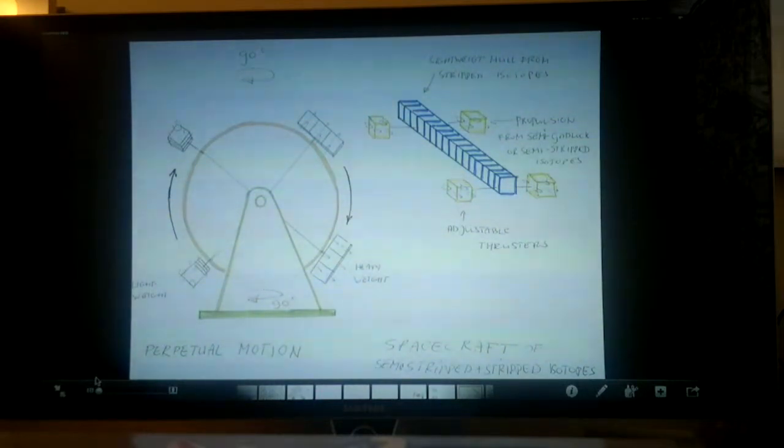By changing its orientation on the bottom and top of a gravity wheel, you can create perpetual motion.